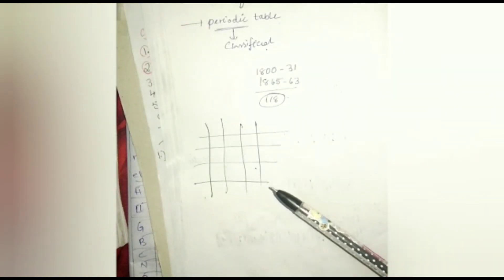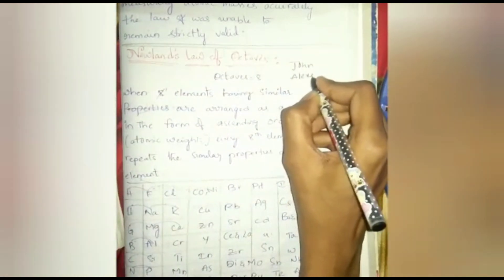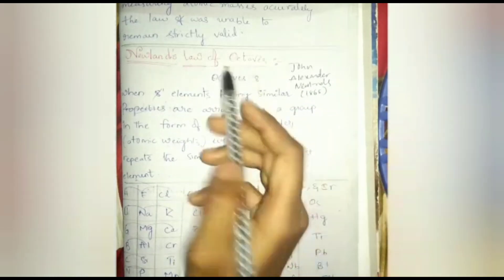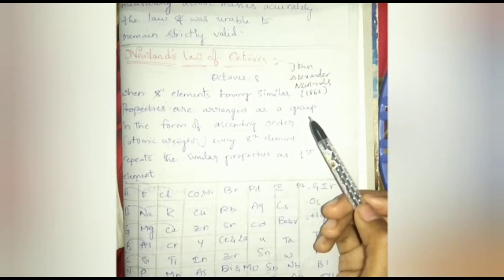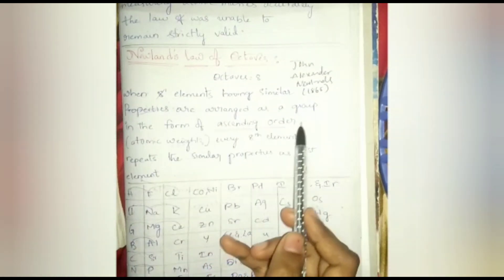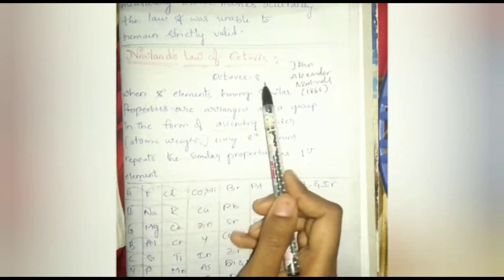The English chemist John Alexander Newlands, in 1865, propounded the Law of Octaves. He arranged elements in increasing order of their atomic weights, and observed that every eighth element repeats similar properties as the first element. Here 'octaves' means eight.